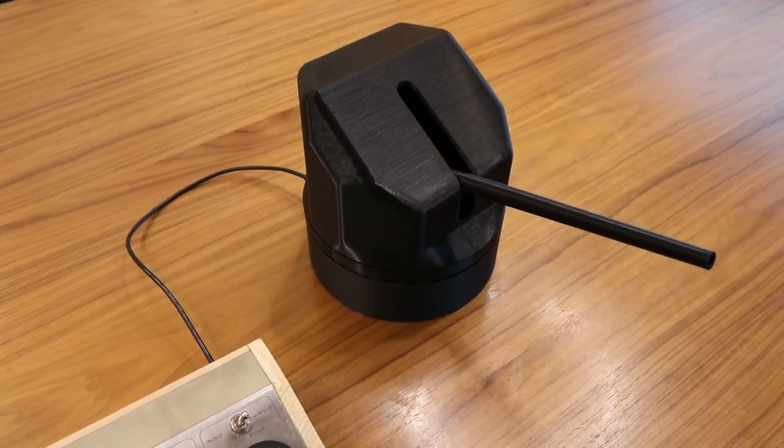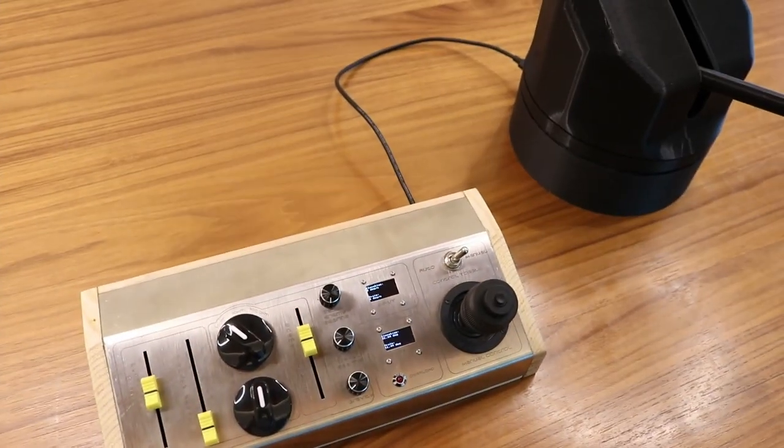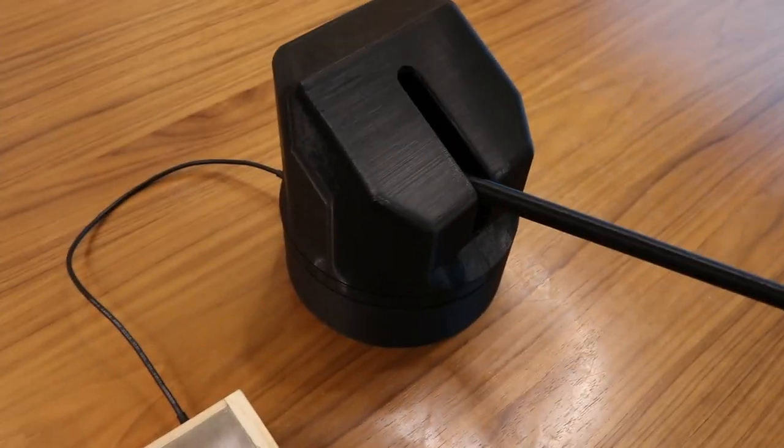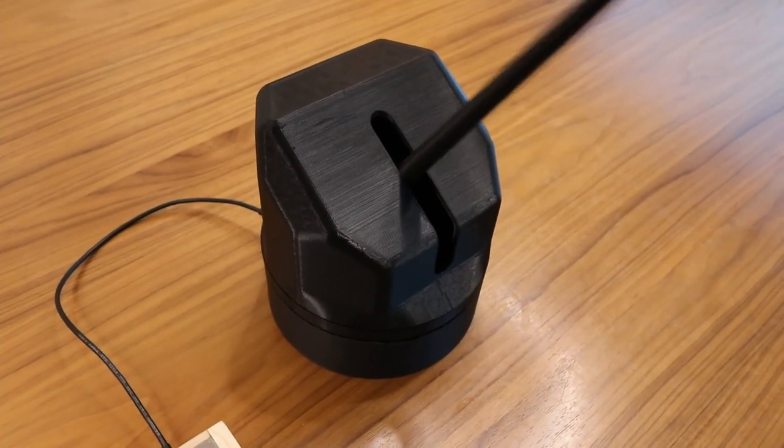Now this turret doesn't actually shoot anything. It's kind of just a display for what the control unit is calculating, so there are two motors on the inside, one for moving it left and right and one for moving it up and down.